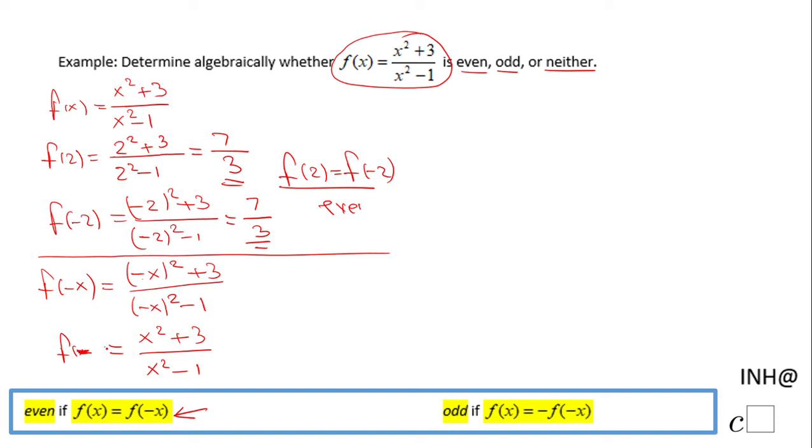And this is f(-x), and you notice now these two expressions are the same: f(x) equals f(-x). So yes, the function is even because yes, this statement is verified.